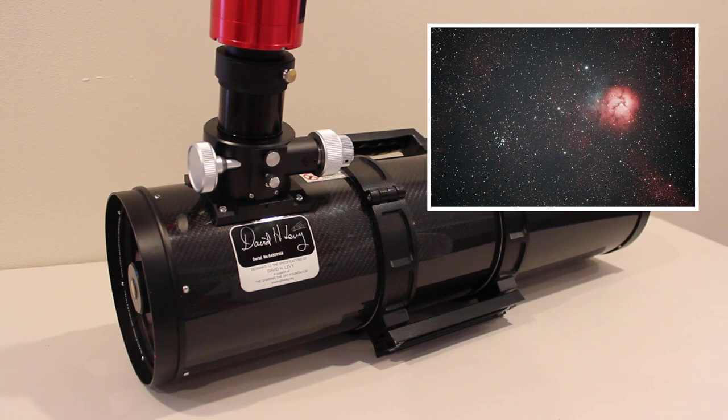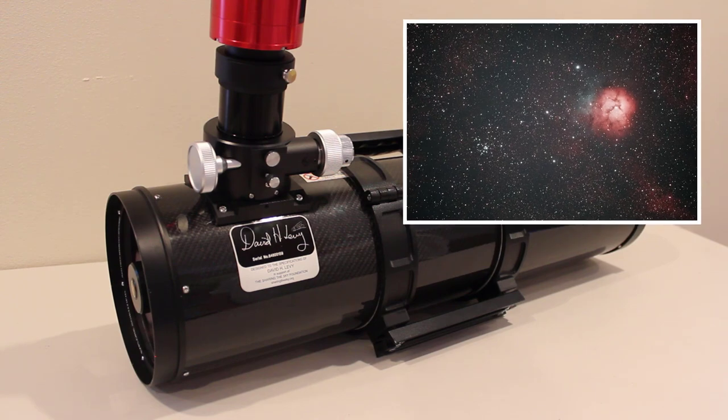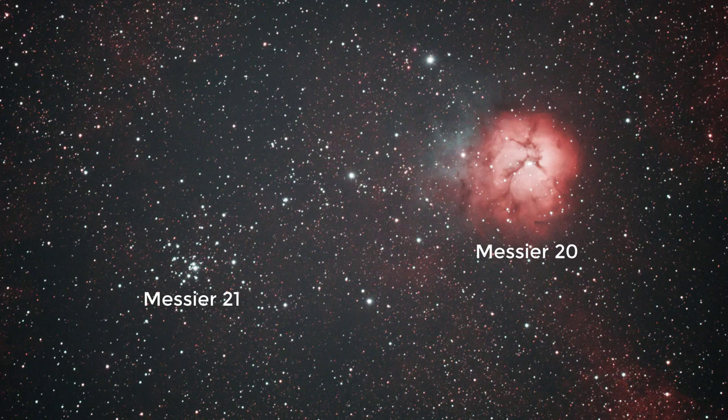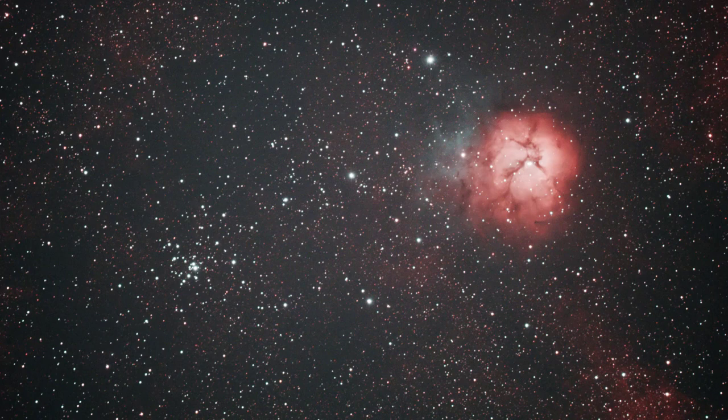Here's an image I took using my second method. This is M20, the Trifid Nebula. And what really amazes me about this image is it's only 15 minutes of data. My southern horizon is largely blocked by trees and other obstacles. So this is only five three-minute exposures. But you can still see I pulled out a lot of the nebulosity in fine detail. So for only 15 minutes, it's not too bad.